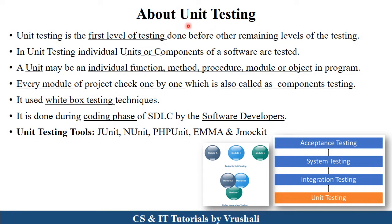What exactly is unit testing? Unit testing is the first level of testing in the testing process of a particular project. As shown in this image, while developing a project, unit testing is the first level. After that, integration, system, and acceptance testing are performed. Basically, unit testing is performed on individual units or components of particular software. Units are the functions, methods, procedures, modules, or objects in your program. So unit testing is performed on all these individual components, checking every module one by one. That is why it is also called component testing.